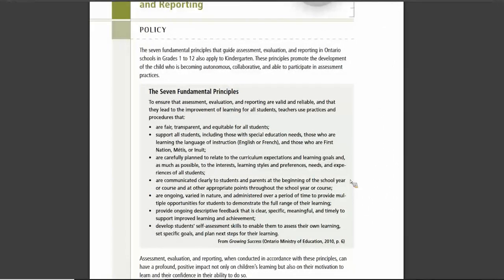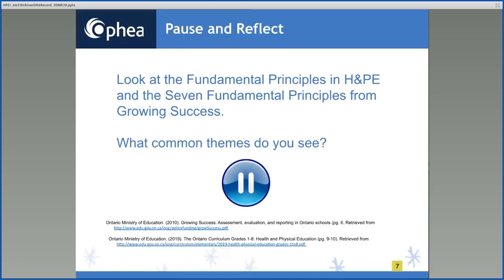When we look at the seven fundamental principles found in the Growing Success document, it is important to keep in mind that the primary purpose of assessment and evaluation is to improve student learning. Teachers should use practices and procedures guided by these seven fundamental principles to ensure that assessment, evaluation, and reporting are valid and reliable and lead to improvement of learning for all students. When these principles are fully understood and observed by all teachers, they will guide the collection of meaningful information that will help inform instructional decisions, promote student achievement, and improve student learning in all subject areas.